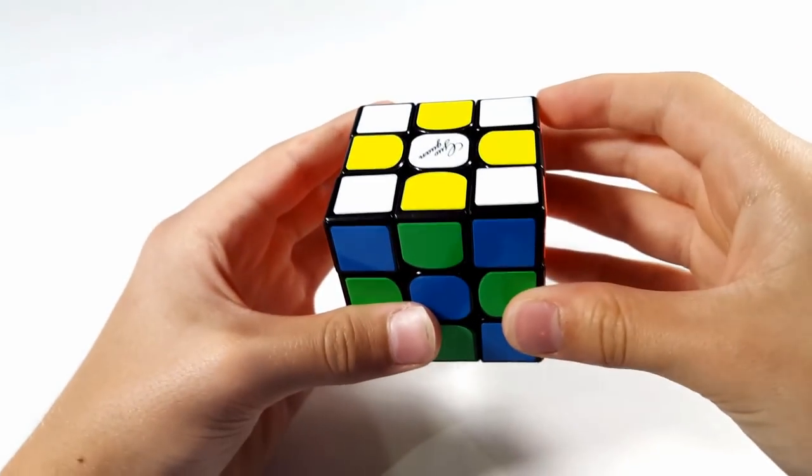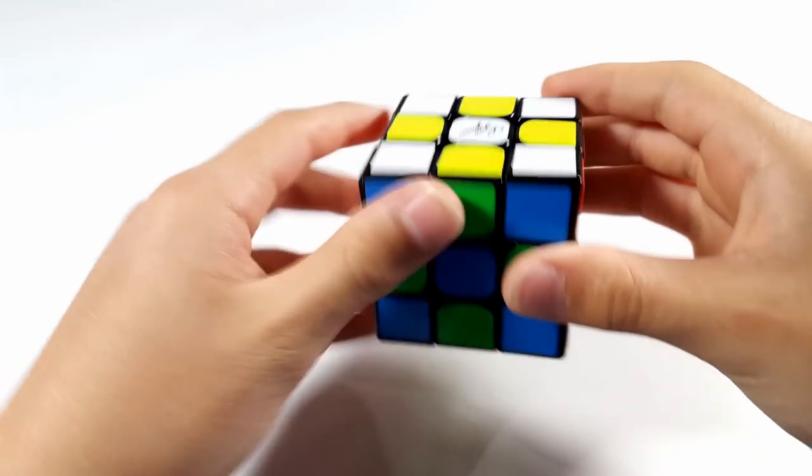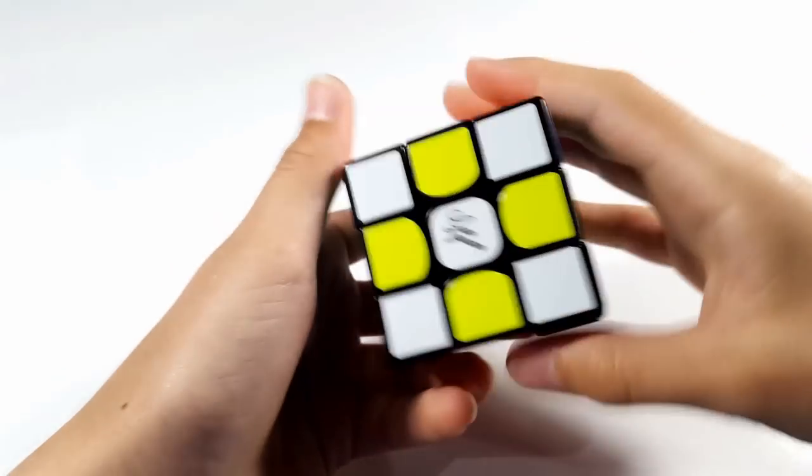The stickers that come on this cube are the standard MoYu Shades as I'm showing you now, but since I prefer my stickerless Yuxiao over my black one, I'll be using that for the rest of the review.